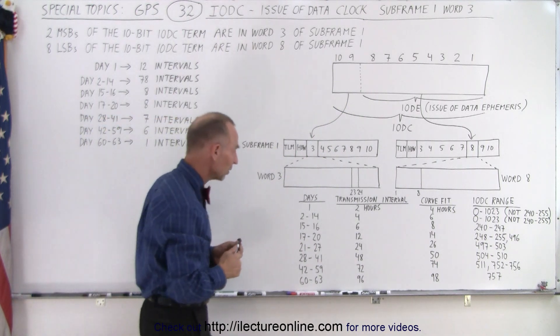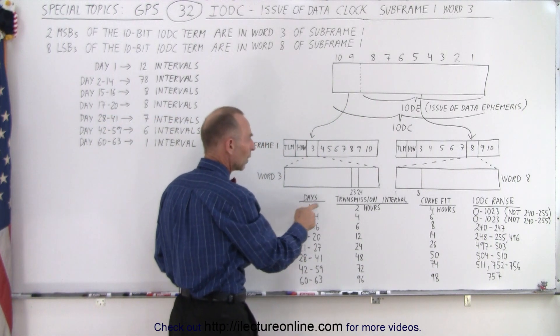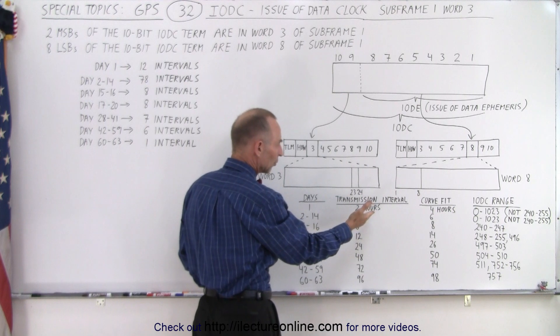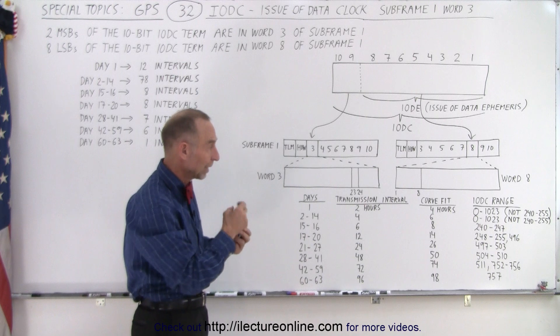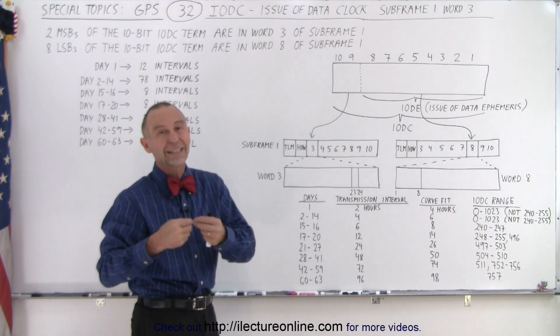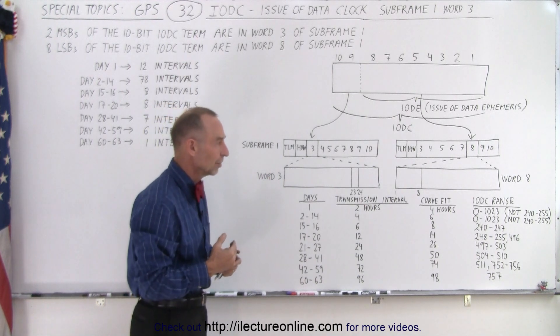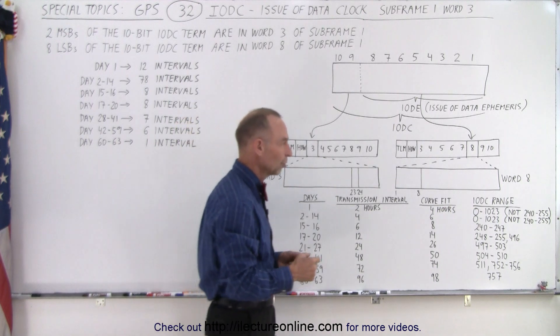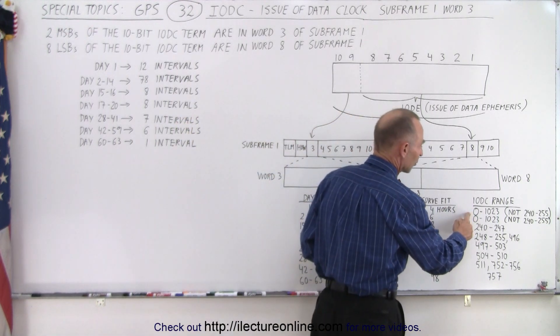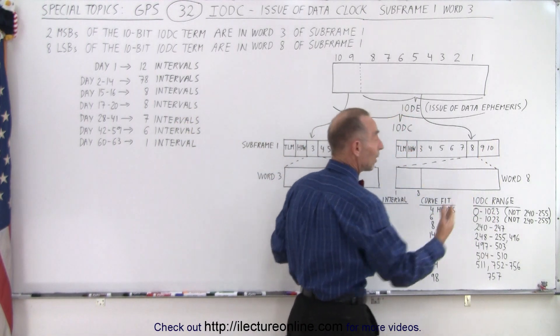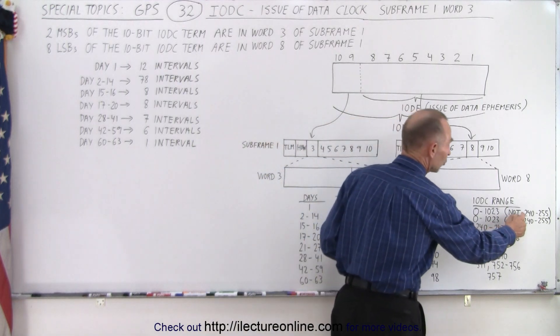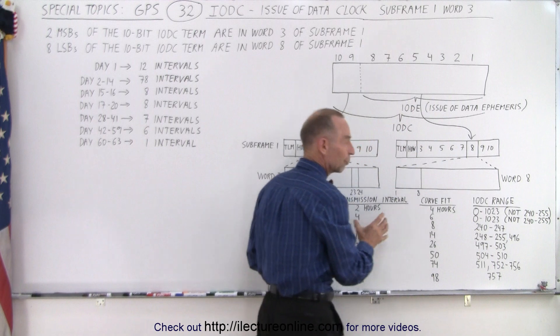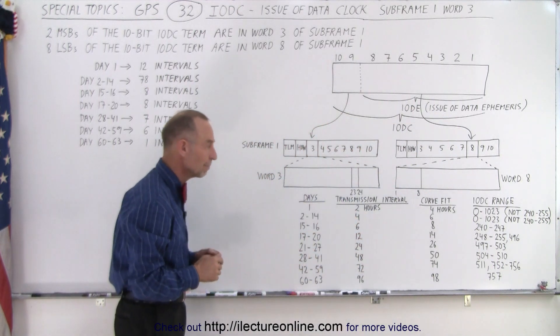Now, notice here that on day 1, you want to refresh every 2 hours. So for day 1, there will be 12 different data sets and they are going to be numbered. So that the data set number is essentially given to you via the IODC. Notice that the restrictions are that it can be anywhere from 0 to 1,023 because that's the range you get for 10 bits. But you cannot include numbers 240 to 255, which are reserved for a special set of the messages.